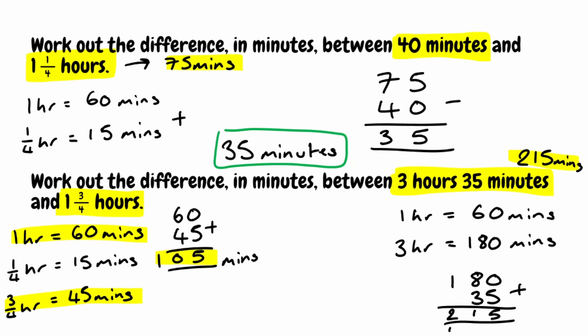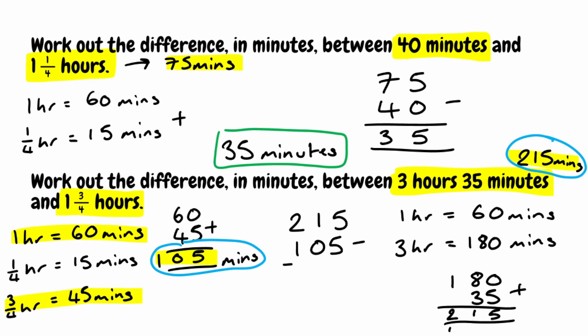We now want to find the difference between 215 minutes and 105 minutes. Doing 215 minus 105: 5 minus 5 is 0, 1 minus 0 is 1, 2 minus 1 is 1. So the difference between 3 hours 35 minutes and 1 and 3 quarter hours is 110 minutes.